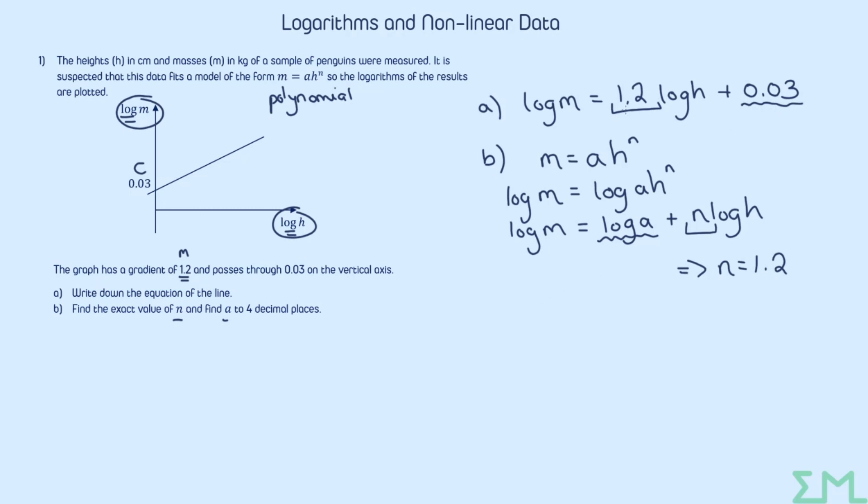We also have this constant term. We're relating that to the constant term in the straight line equation. So if we write that down we get log a equals 0.03. Remember we're working in base 10. So we're going to do a equals 10 to the 0.03. And it says to four decimal places. So stick it in the calculator. 1.0715. And there we go. We've got our two answers.